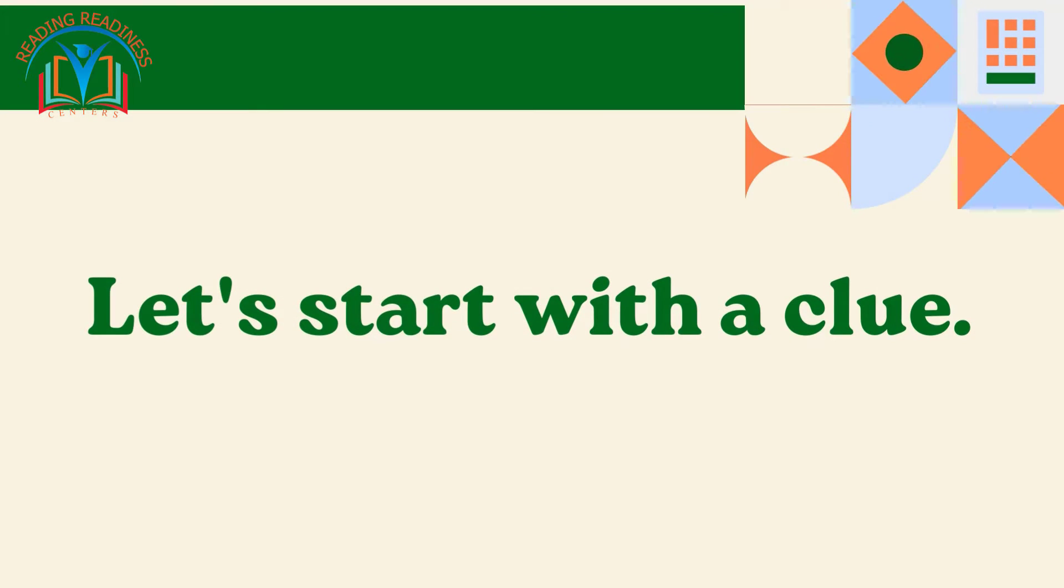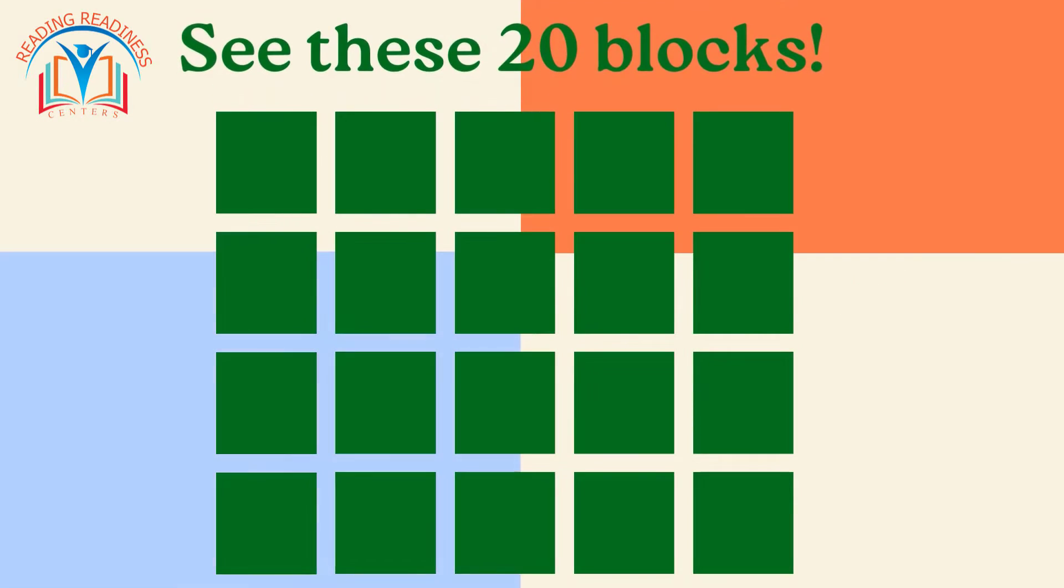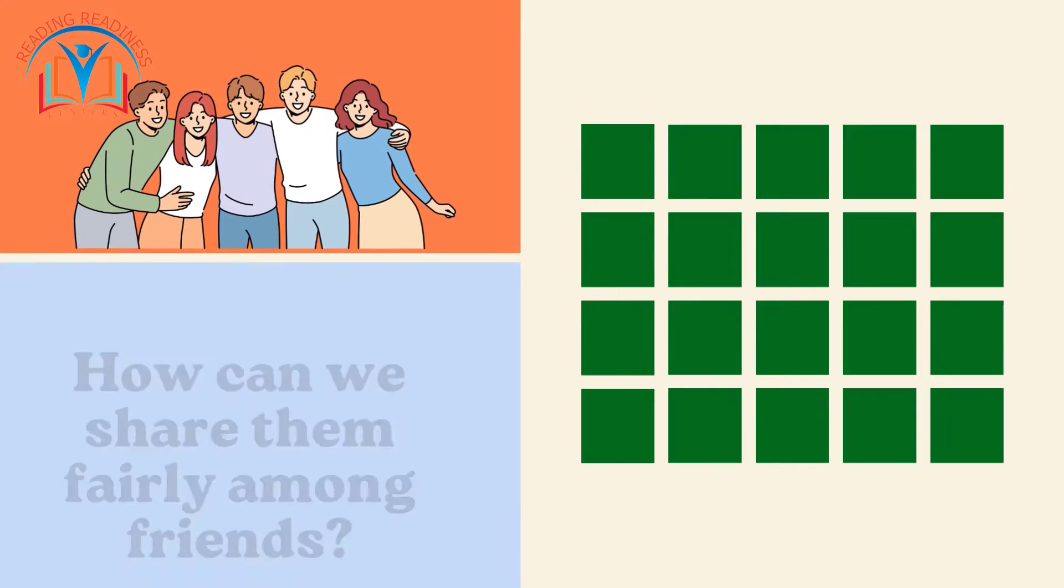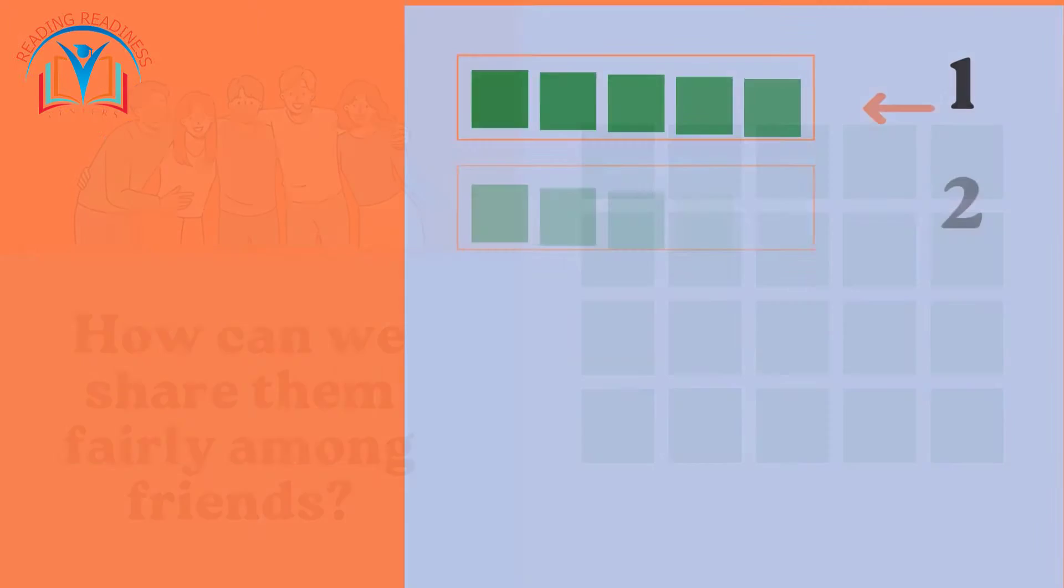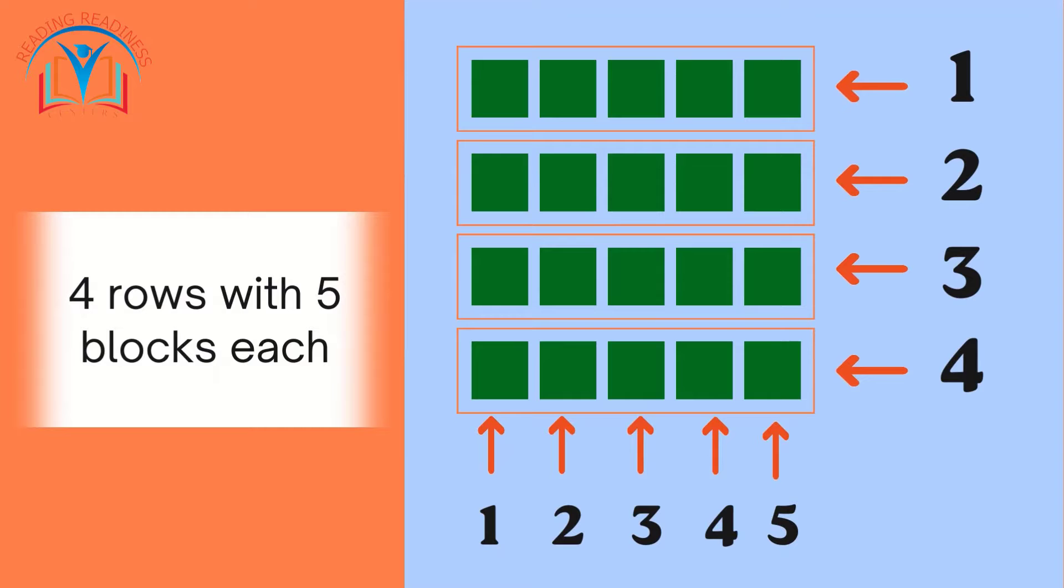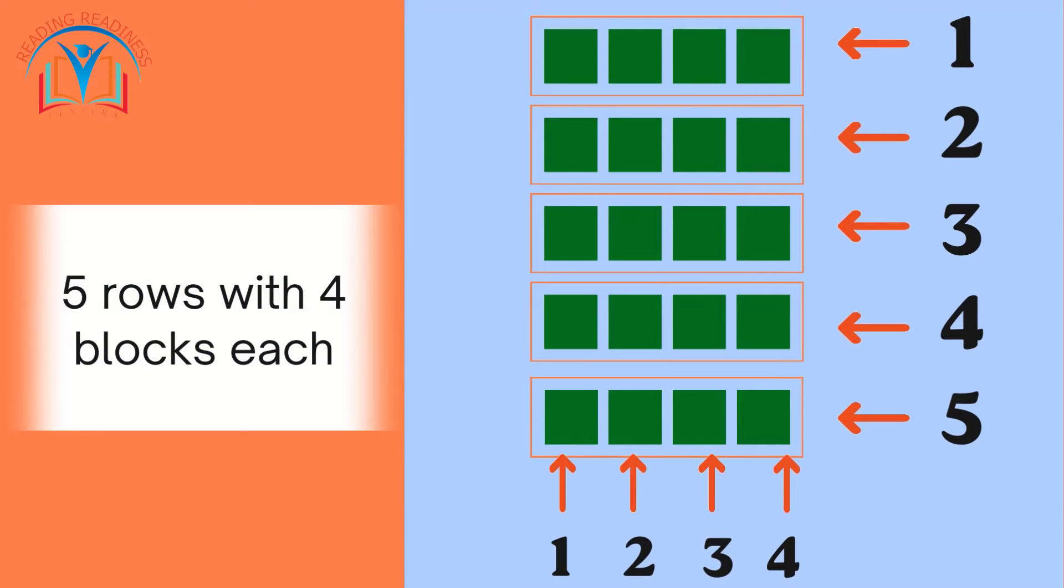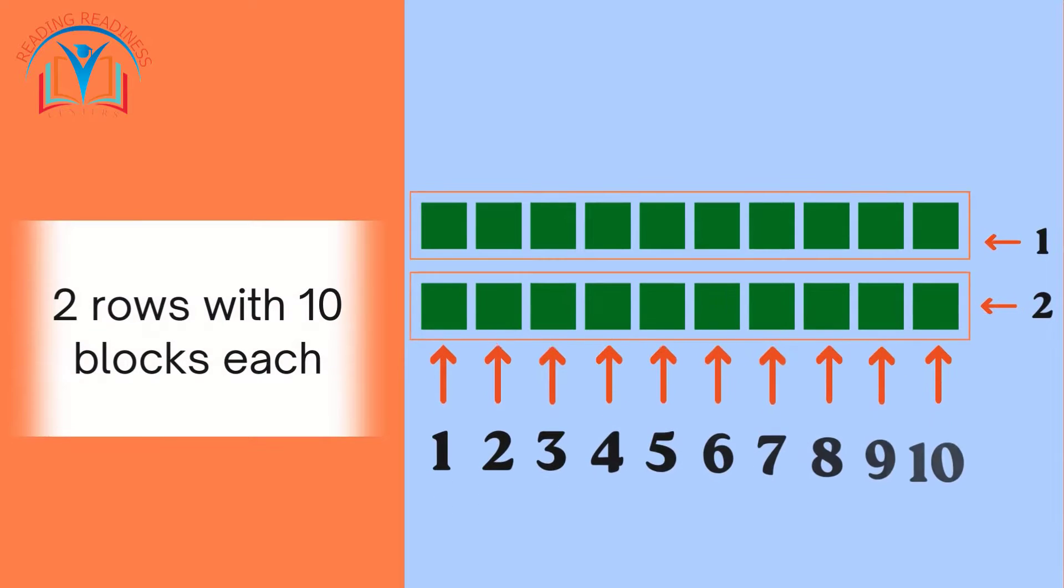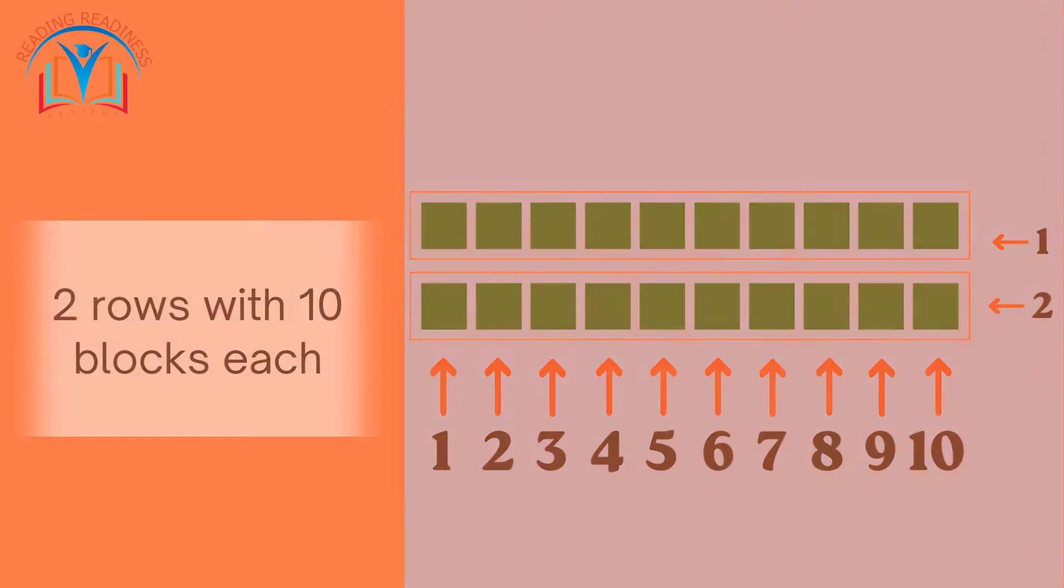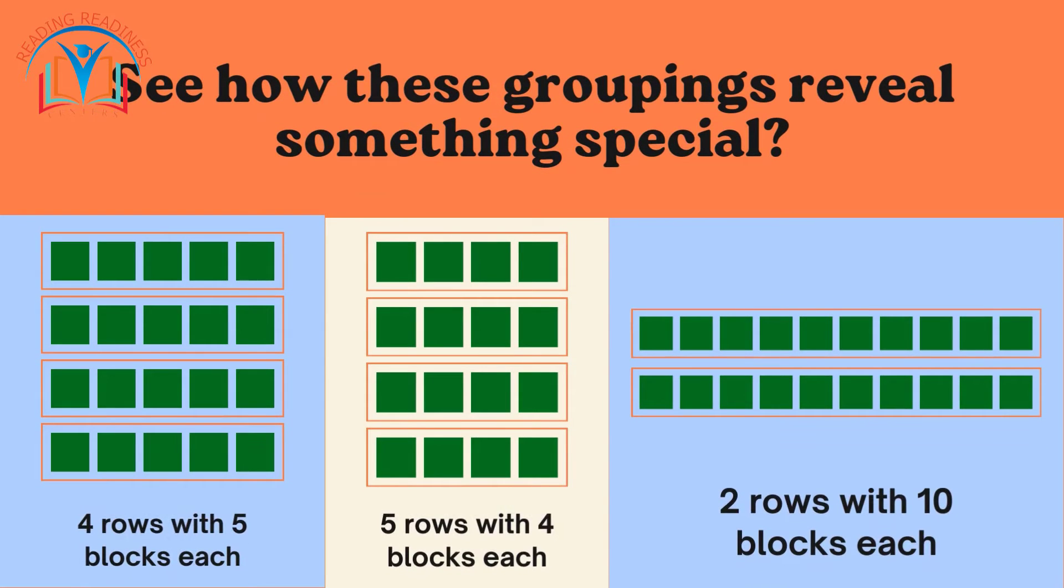Let's start with a clue. See these 20 blocks. How can we share them fairly among friends? Maybe in 4 rows of 5 blocks each, or 5 rows of 4 blocks each, or 2 rows with 10 blocks each. See how these groupings reveal something special.